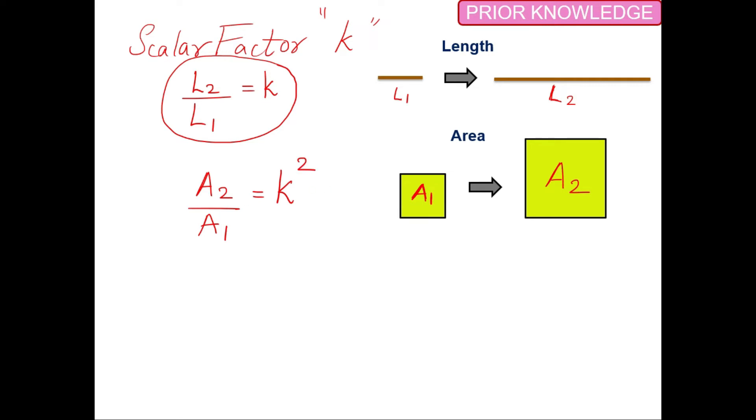The third relation is for volume. We have two similar cubes, with the volume of the smaller one as V1 and the larger as V2. The ratio V2 over V1 equals k cubed. This is the prior knowledge you need. Let's move on to the question.